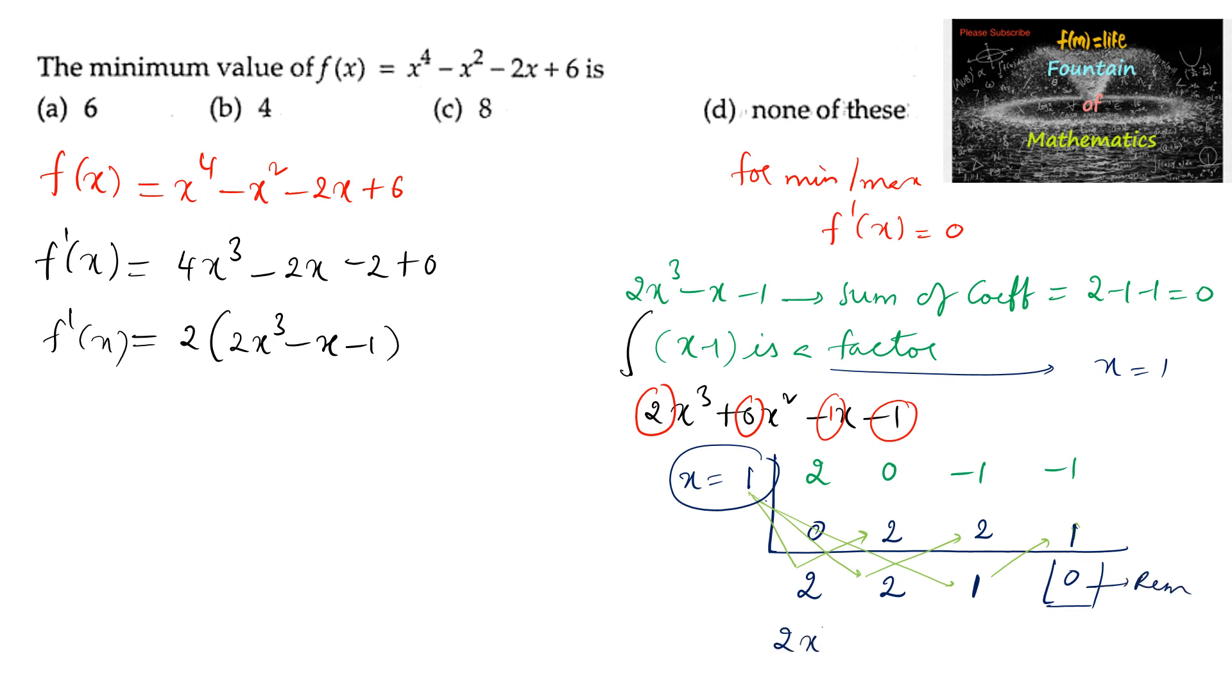So we can write here 2x squared plus 2x plus 1. So we can write this 2 times (x minus 1) into (2x squared plus 2x plus 1). And here the discriminant for this quadratic polynomial is b squared minus 4ac, which is negative. Since delta is negative, the roots are imaginary roots. There are no real roots. We cannot factorize it.